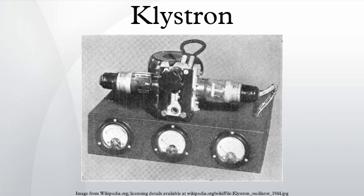Klystrons can produce far higher microwave power outputs than solid-state microwave devices such as Gunn diodes. In modern systems, they are used from UHF up through hundreds of gigahertz. Klystrons can be found at work in radar, satellite and wideband high-power communication, medicine, and high-energy physics. At SLAC, for example, klystrons are routinely employed with outputs in the range of 50 megawatts and 50 kilowatts at 2856 megahertz. The Arecibo planetary radar uses two klystrons that provide a total power output of 1 megawatt at 2380 megahertz. A company called Global Resource Corporation used a klystron to convert the hydrocarbons in everyday materials — automotive waste, coal, oil shale, and oil sands — into natural gas and diesel fuel.